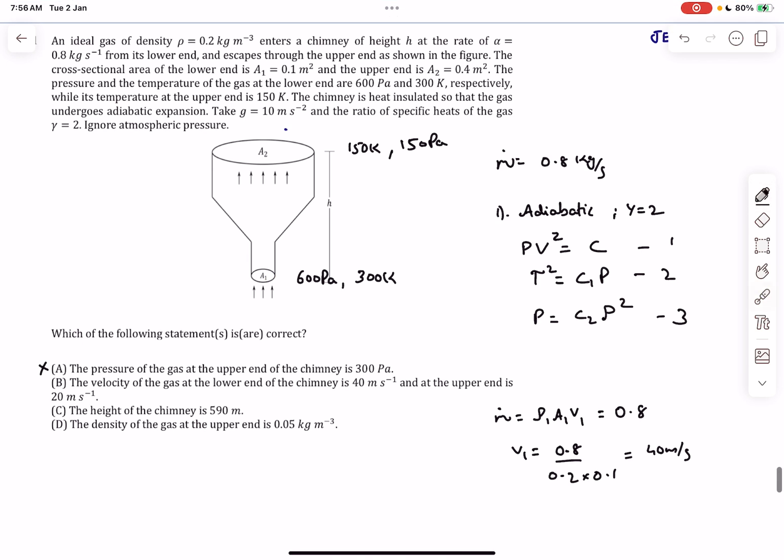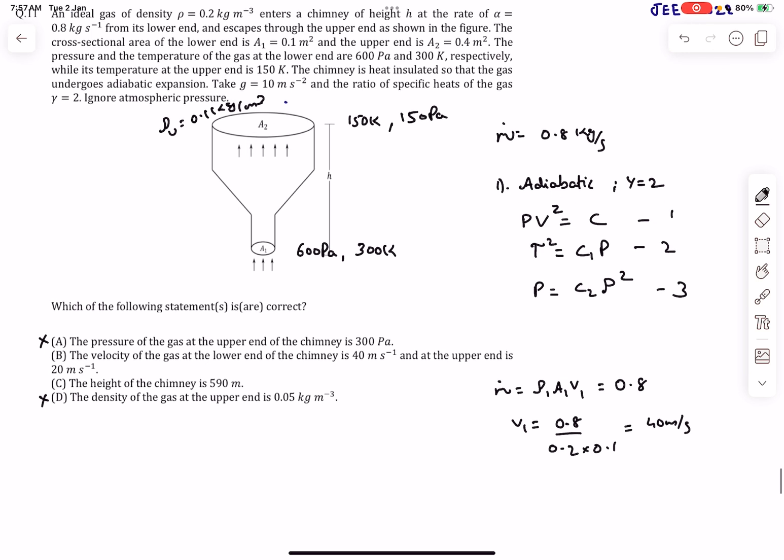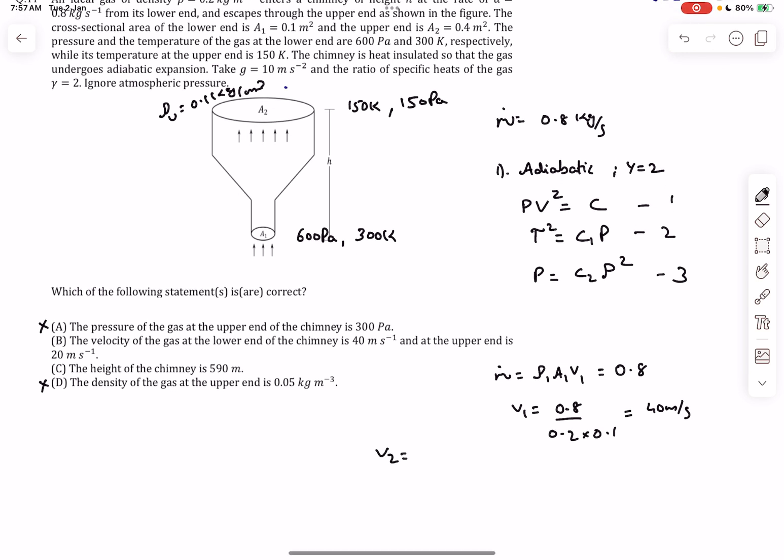The density at the upper end is 0.1 kg/m³, half of the density at the bottom. With that we can also disprove option D. Now we can find v₂ as ṁ/(ρ₂·A₂). Density is half, the area is four times, so the velocity comes out to be 20 m/s. Option B is perfectly fine.